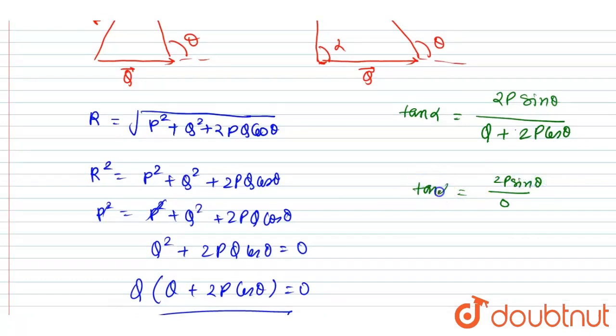So you can see here the tan alpha is approaching to infinity. Right, so tan alpha approaching to infinity, it means that the angle between the Q vector and the resultant of P vector and Q vector is 90 degrees.